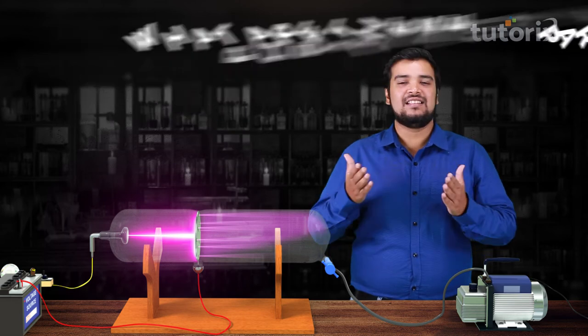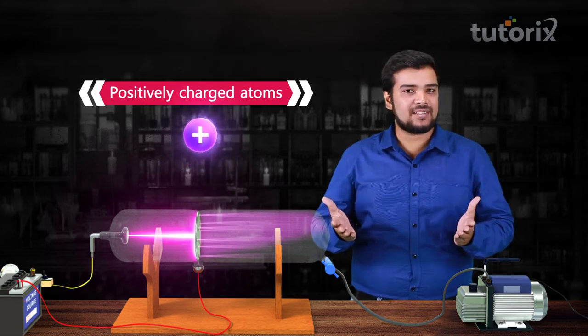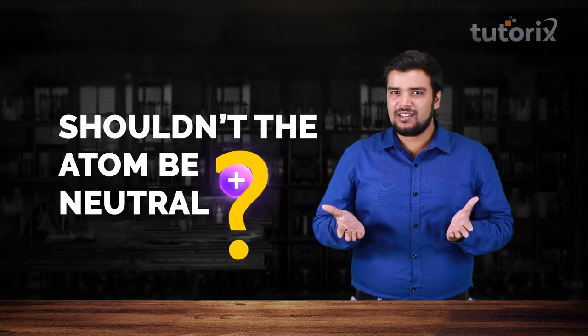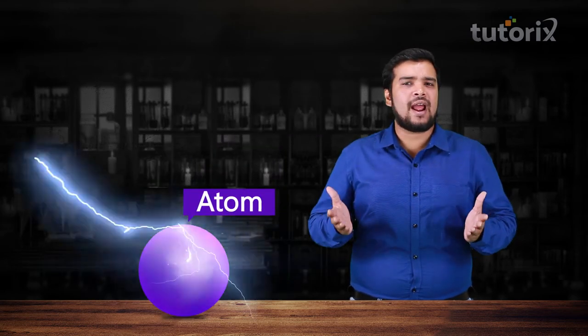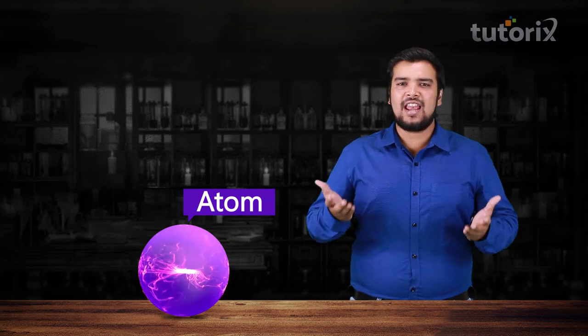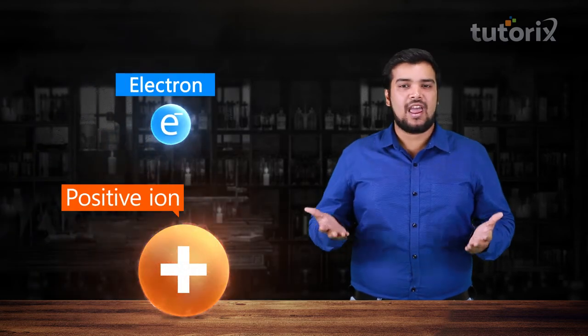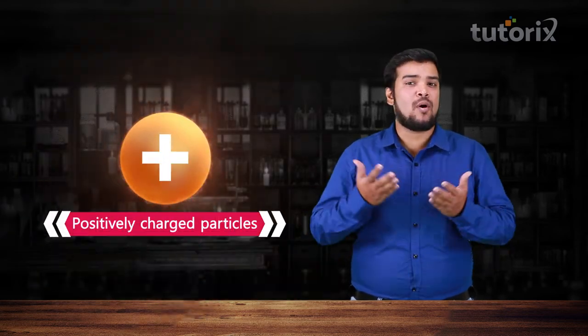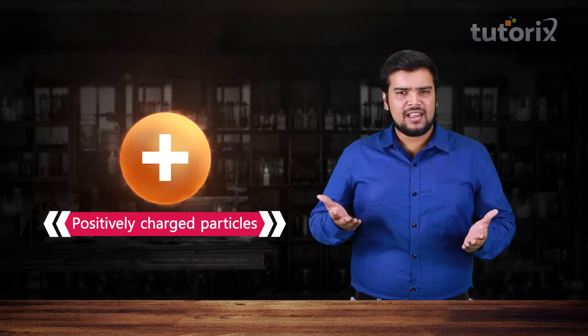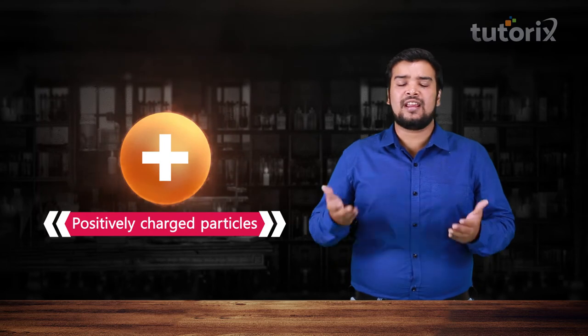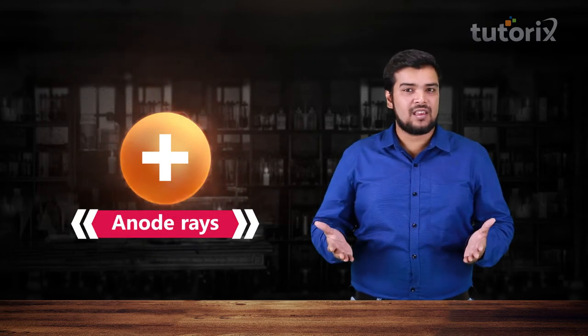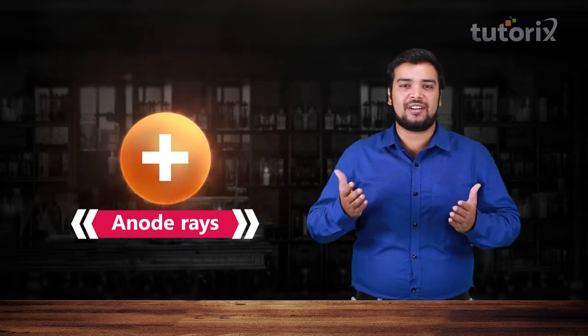Well, these are positively charged atoms. But shouldn't atoms be neutral? Well, scientists realized when they applied the strong electrical force, electrons came out of the atom and what was left behind was positively charged particles. These positively charged particles are nothing but ions created when electrons are removed from the atoms, which were seen as anode rays.